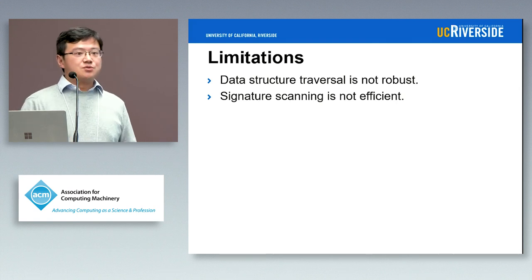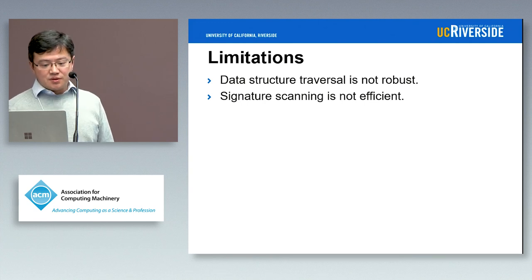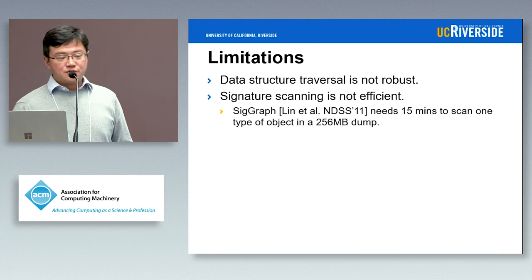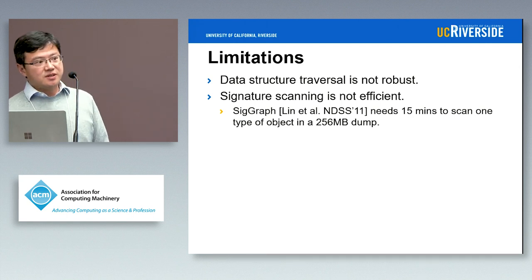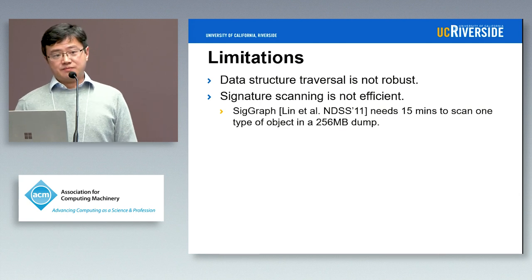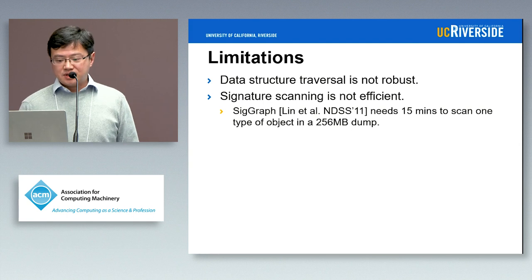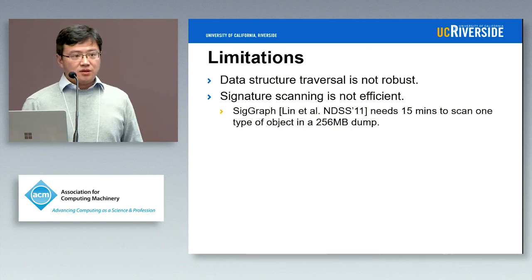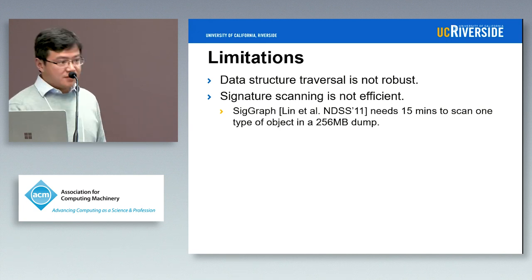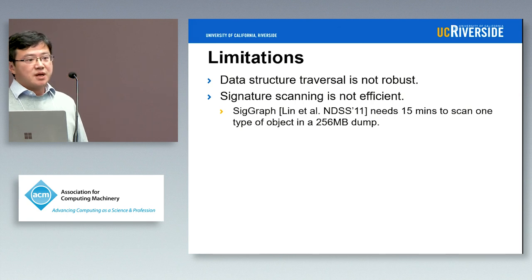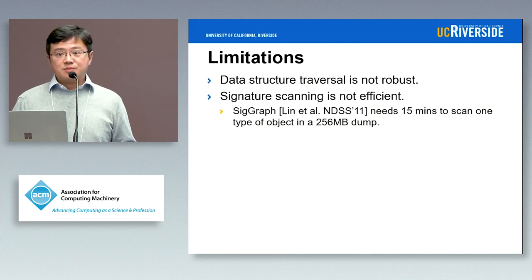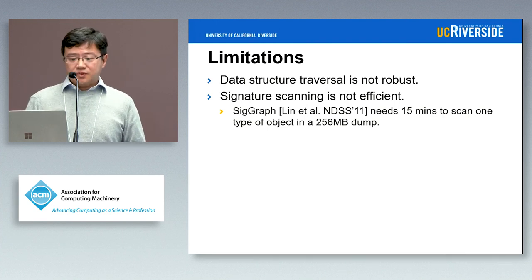Signature scanning is not very efficient — you have to scan every single offset in memory. It becomes even more expensive if you want to make your signature scanning more robust. For example, SIGGraph, a paper published in NDSS 2011, not only examines value constraints but also pointer-to relations. This makes it more robust, but since you have to examine more data, more pointers, and objects several hops away, it's even more expensive. For a 256-megabyte memory dump it takes up to 15 minutes — and nowadays you have 8 gigabytes of memory.